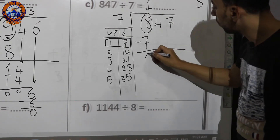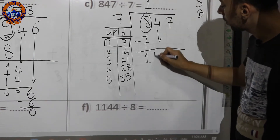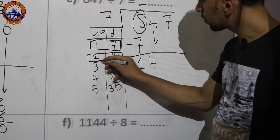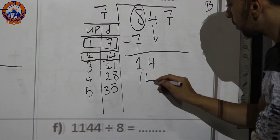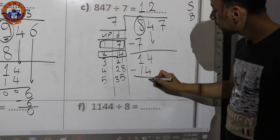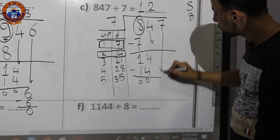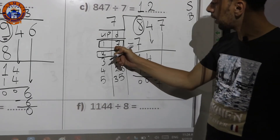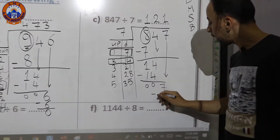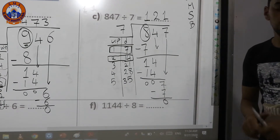Bring down the next digit 4, giving 14. Search the table — here is 14. Put 14 down and 2 up. Subtract: 14−14=0. Bring down the next digit 7 — here it is in the table. Put 7 down and 1 up. Subtract and get 0. The answer is 121.